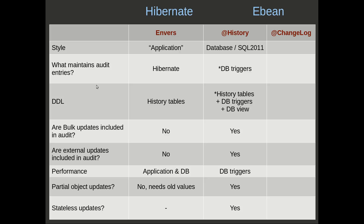In terms of DDL generation, EnVers will generate history tables — these are additional tables to your standard tables. eBean does the same, it generates history tables, but it also generates database triggers and a database view. There's an asterisk here: if you're using a database with built-in support, then eBean doesn't need to generate those.